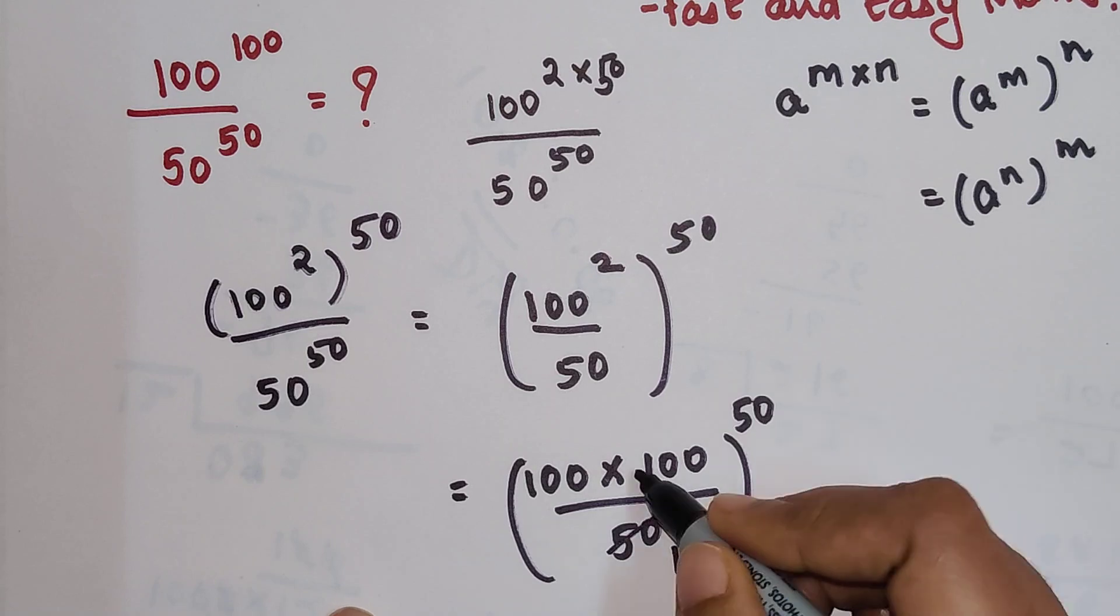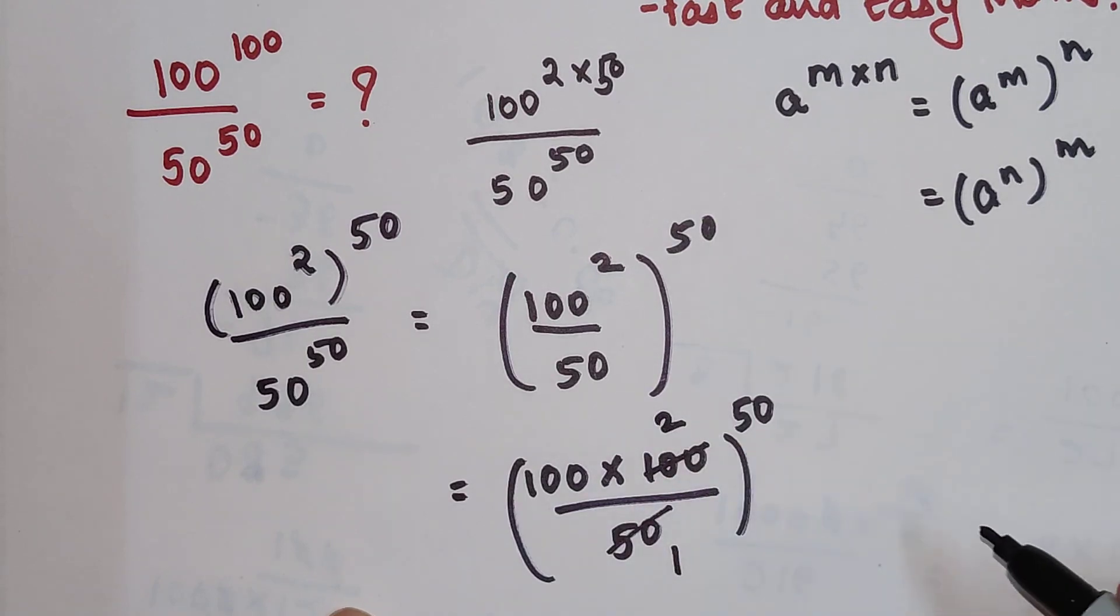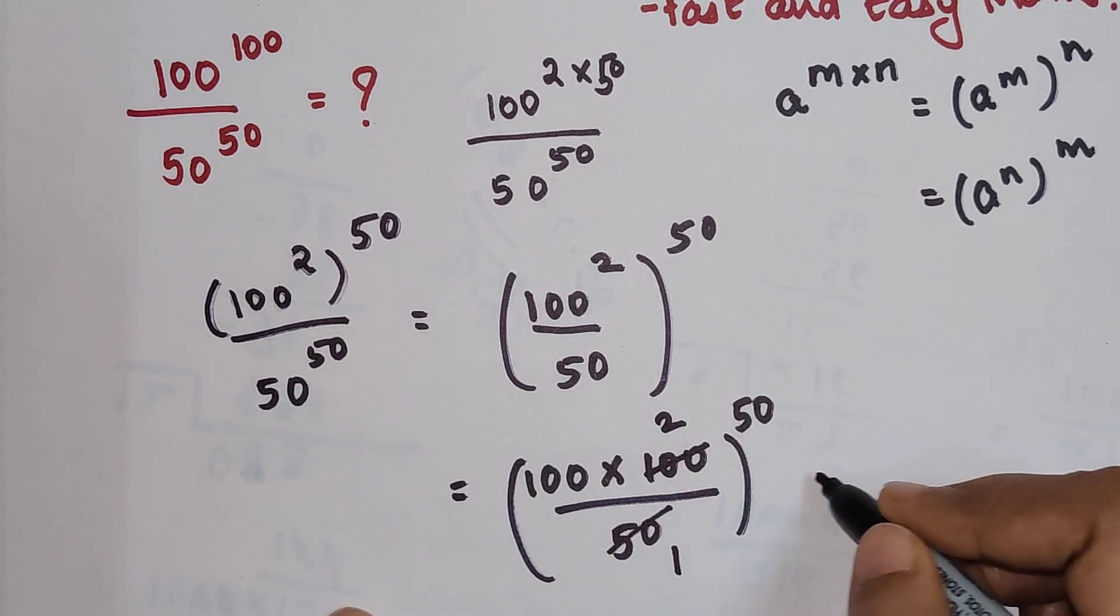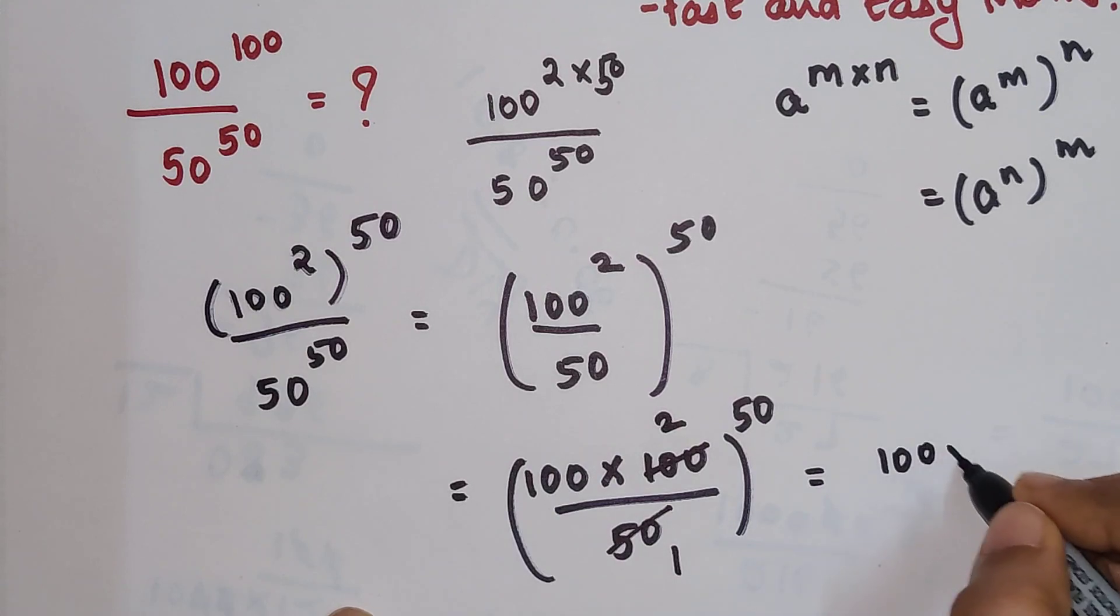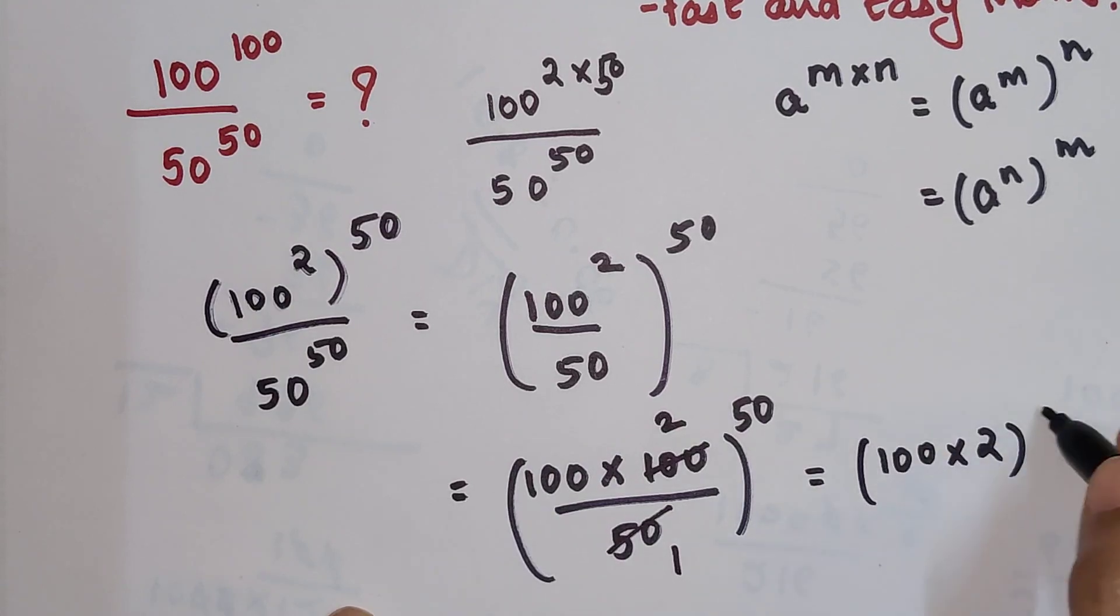So now I know that 50 ones are 50, and 2s are 100. So basically what I am getting is 100 times 2, the whole raised to 50.